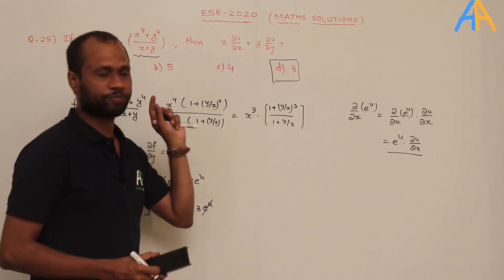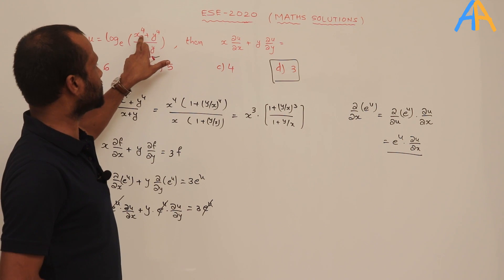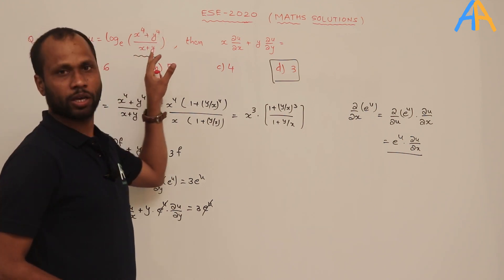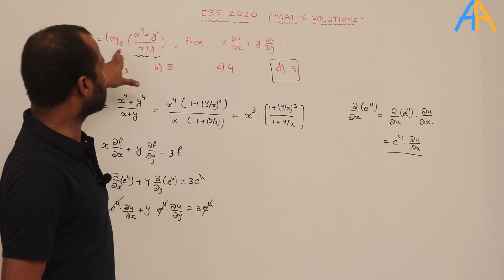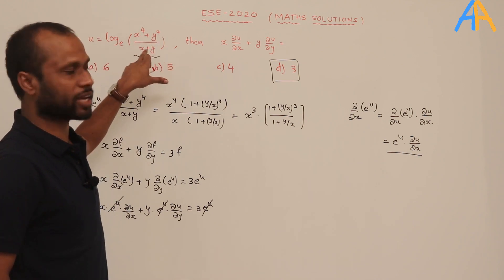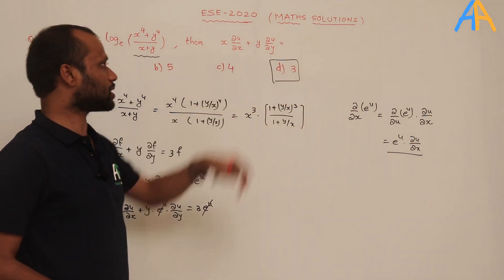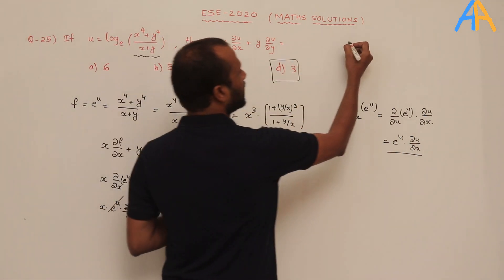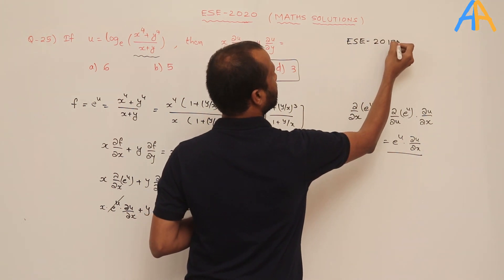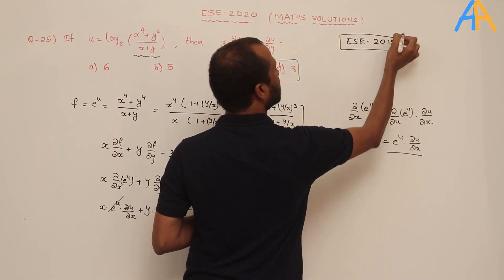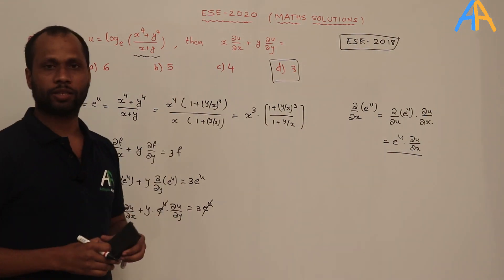A similar question appeared in ESE 2018 prelims: u = log((x² + y²)/(x + y)), find x·∂u/∂x + y·∂u/∂y. That was also solved in the video lectures, and the answer is 1 (order 1 homogeneous function after simplification). In this 2020 question the answer is 3.